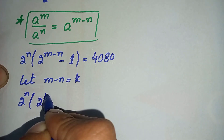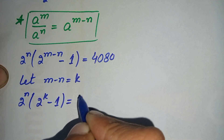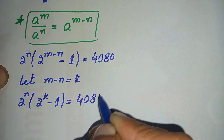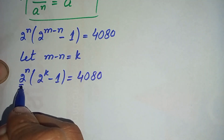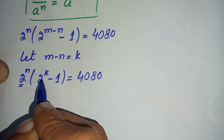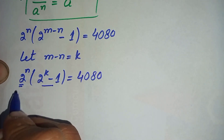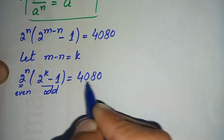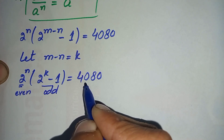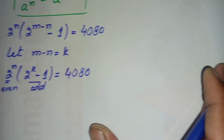Replacing m minus n with k, the equation becomes: 2 raised to power n times (2 raised to power k minus 1) equals 4080. Now, 2 raised to power n is an even number, and 2 raised to power k is also an even number, but 2 raised to power k minus 1 is an odd number. So we have an even number times an odd number. We will factorize 4080 as a product of an even number and an odd number, then compare.